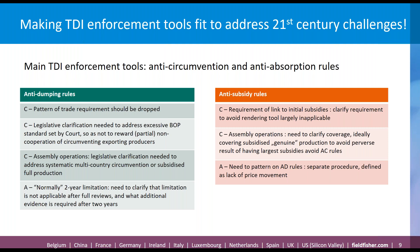In the solar glass case, we helped the solar glass industry obtain anti-dumping duties of around 36% and anti-subsidy duties of around 17% on imports from China. Following the imposition of these measures, the Chinese producers dropped their export prices by up to 30%. Seeing that, the Commission initiated an absorption review and increased the dumping duties from 36% to 71% — a great result for the industry, and from then on the measures were effective.